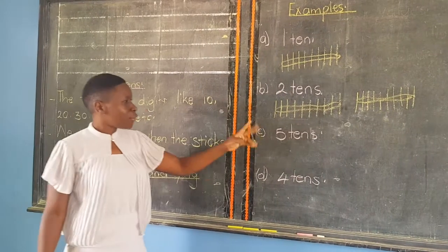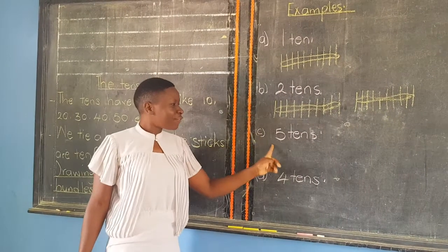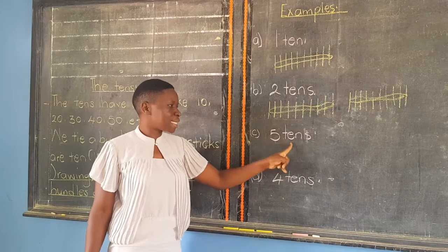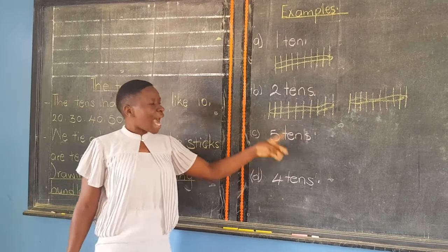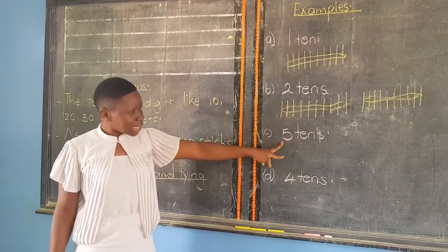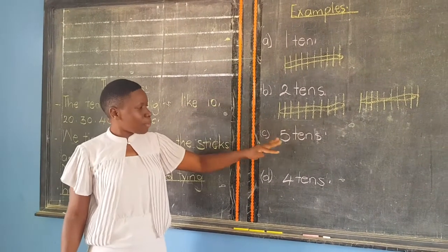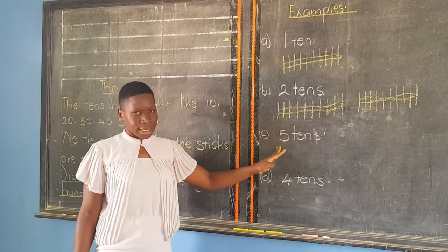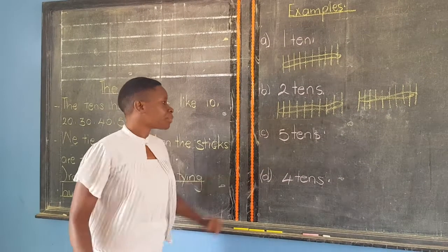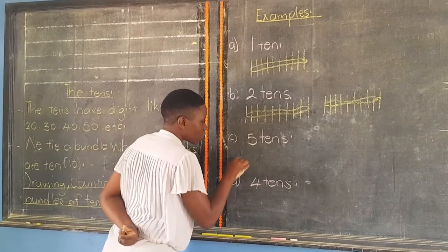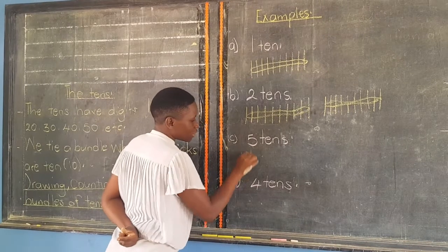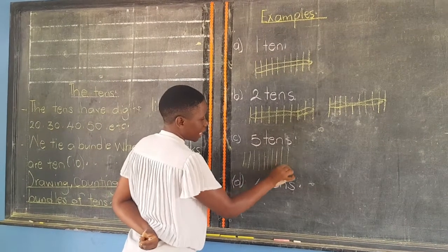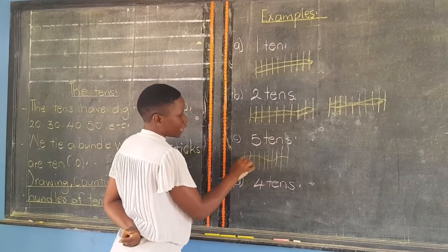Then we have Part C, which is saying five tens. We are dealing with five tens, meaning I am going to draw five bundles of tens, each having ten sticks. We count very fast: one, two, three, four, five, six, seven, eight, nine, ten. That is one.